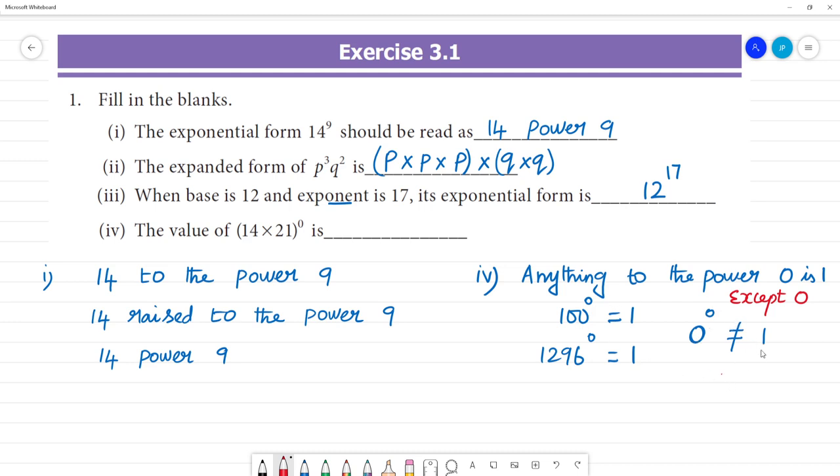Anything to the power 0 is 1. We can write it as 14 to the power 0 multiplied by 21 to the power 0. So 14 to the power 0 is 1, multiplied by 21 power 0 is 1. So what is the answer? Answer is 1. Anything to the power 0 is 1.